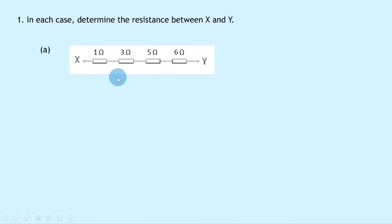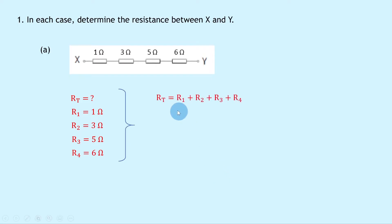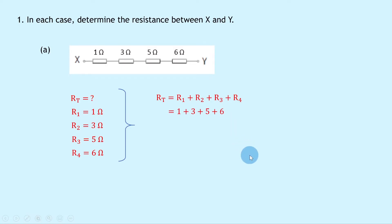We're thinking about resistors in series here. Writing down what we know: we're trying to find the total resistance between x and y. R1 is 1 ohm, R2 is 3 ohms, R3 is 5 ohms and R4 is 6 ohms. We write down the simple relationship for resistors in series: RT equals R1 plus R2 plus R3 plus R4. Substituting in the numbers gives us 1 plus 3 plus 5 plus 6, which gives a final answer of 15 ohms.